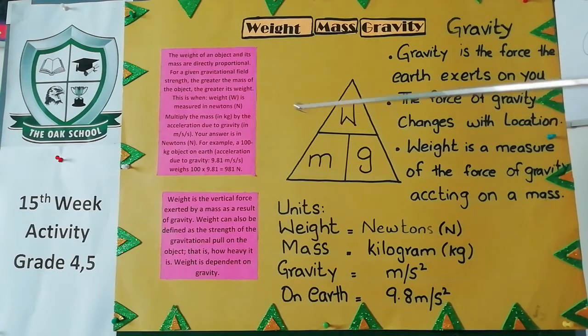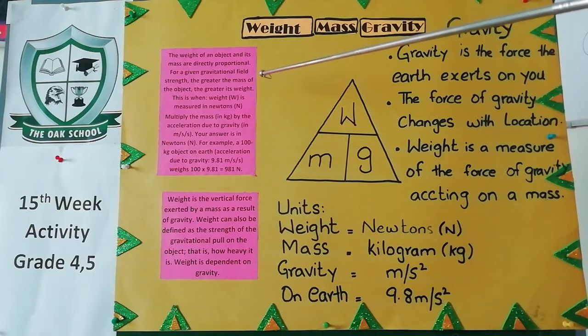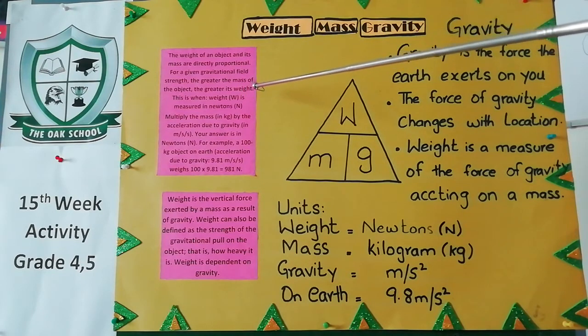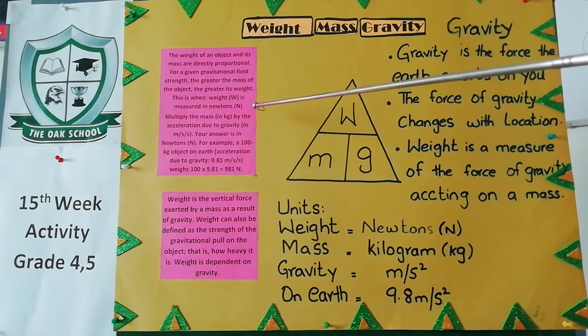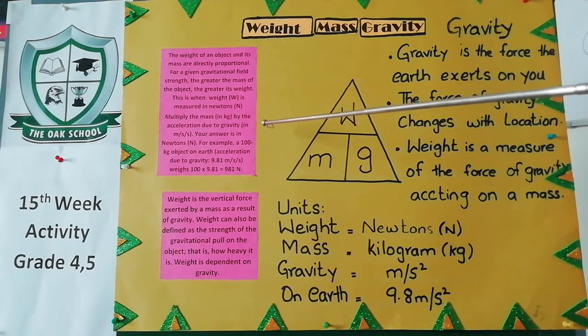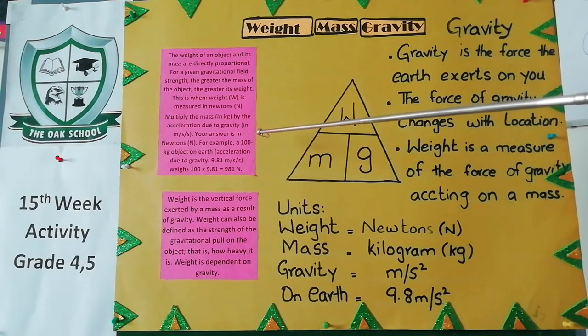What is weight? The weight of an object and its mass are directly proportional. For a given gravitational field strength, the greater the mass of the object, the greater its weight.